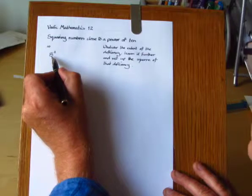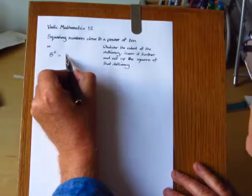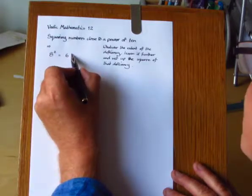And we reduce 8 by 2, making 6. And then we put down the square of the deficiency. The deficiency is 2, square that is 4.